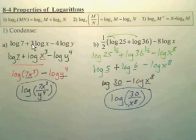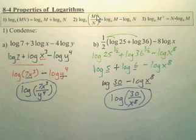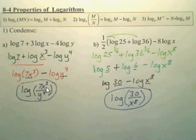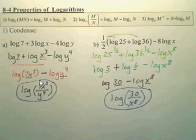Then you have some properties of logs. If you have two things multiplied inside a log, you can make it a plus. If you have two things minus, you can make it a divide. And if you have a power, you can take it out front. We do something called condensing — taking all these into one log. First, take anything in front and make it a power. A plus is a multiply, a minus is a divide. Pluses are basically on top, minuses are on bottom.